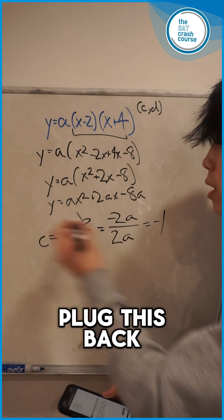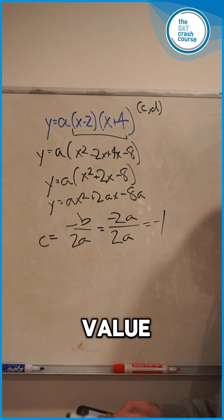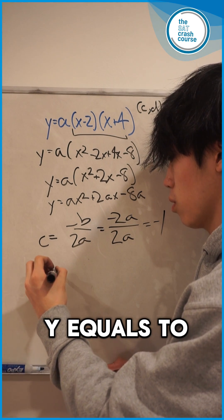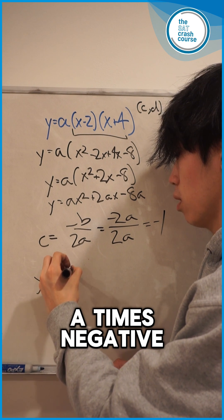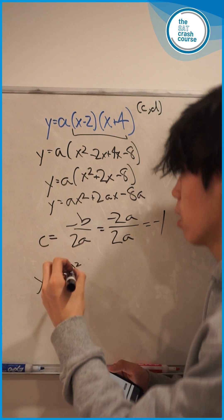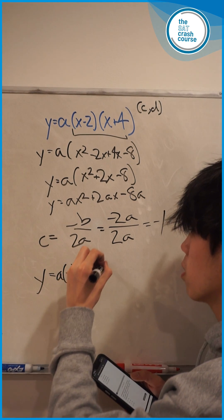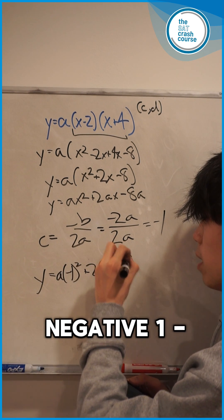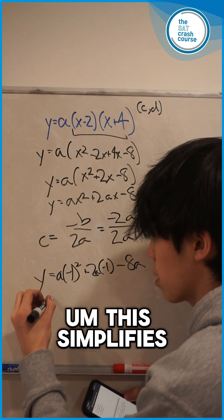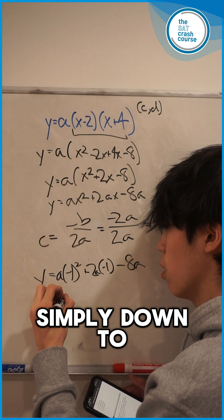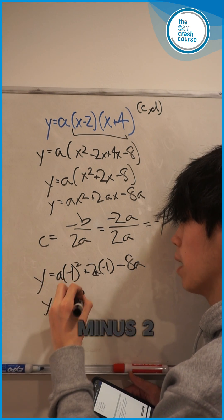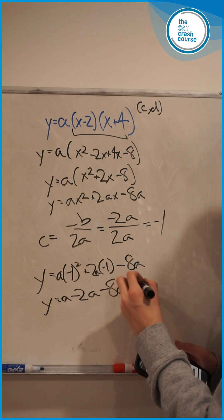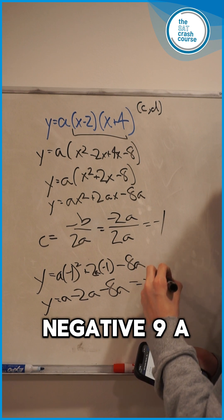Now we can plug this back in to solve for the y value, which is going to be our d. So we get y equals a times negative 1 squared plus 2a times negative 1 minus 8a. This simplifies down to y equals a minus 2a minus 8a, which gives us negative 9a, which is answer choice A.